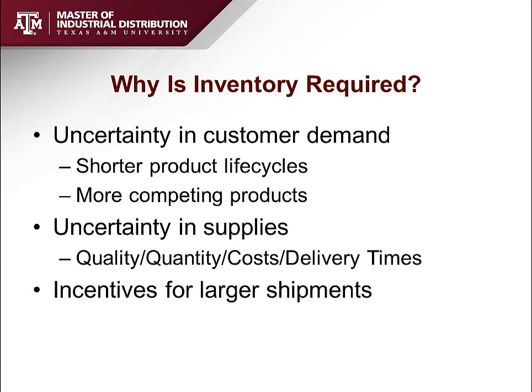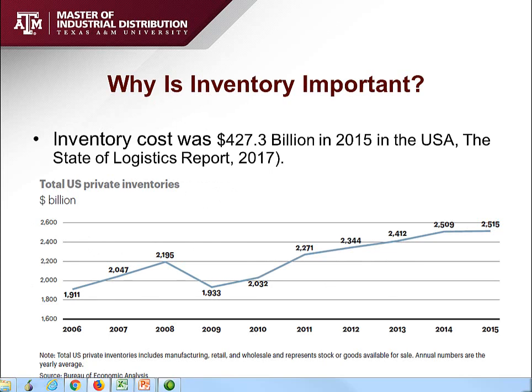The second reason is uncertainty on the supply side. These uncertainties could be associated with the quality, the quantity of the products we are going to receive, the cost, and delivery times. Finally, we keep inventories because shipping larger quantities is cheaper.